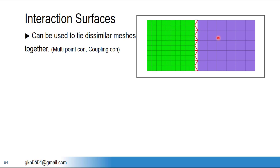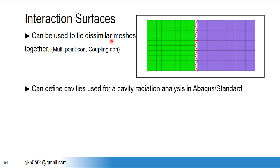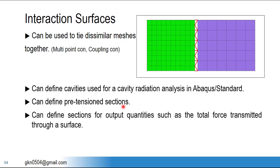Apart from contact and loads, we can define connections via interaction surfaces — for example, dissimilar mesh connections where different-size elements from different components need to be connected. We can also define multipoint connections, coupling, and tie connections by means of interaction surfaces. Additionally, cavity radiation can be defined using interaction surfaces in Abacus Standard, as well as pretension sections.